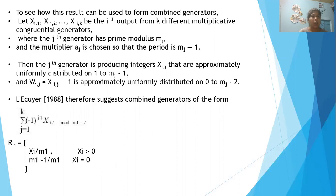X_i,1, X_i,2 to be the output, where i is the output from the k-th multiplicative generator.